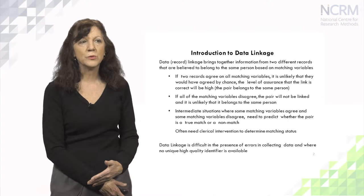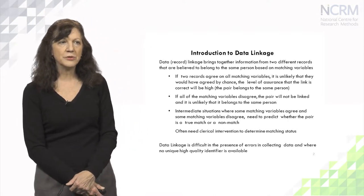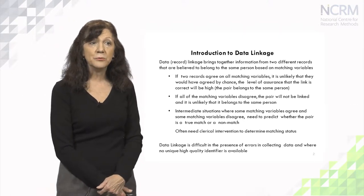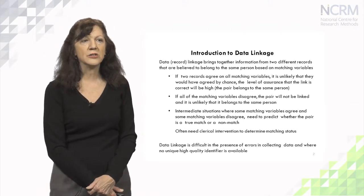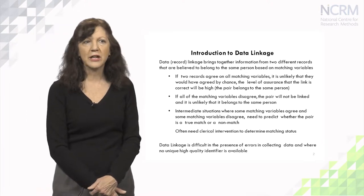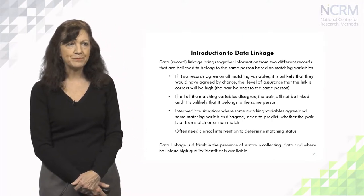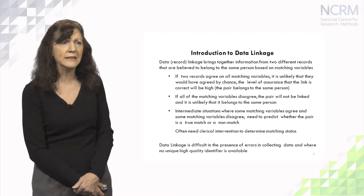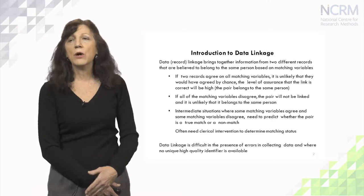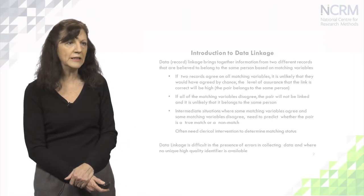The problem is when we have intermediate situations where some matching variables agree and some disagree, and we need to predict whether the pair is a true match or not. This will often require some sort of clerical intervention to determine the matching status. The core problem in data linkage is the presence of errors when we collect the data and where we don't have unique high-quality identifiers in order to carry out the linkage.